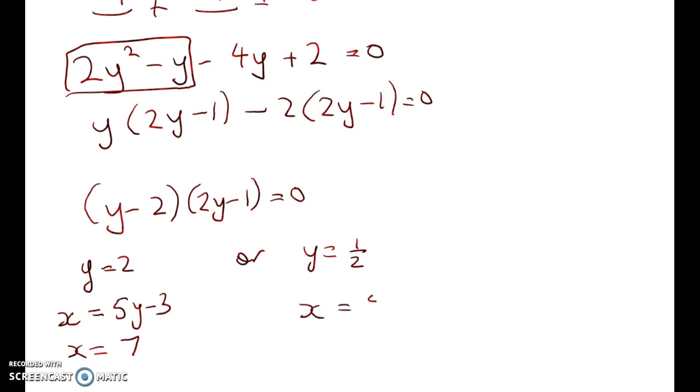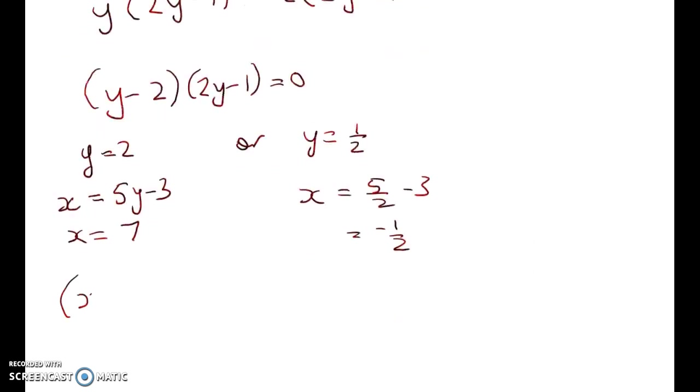Here I get x is equal to 5 over 2 minus 3, which is negative a half. So we've got two solutions. We've got (7, 2) or (negative a half, one half).